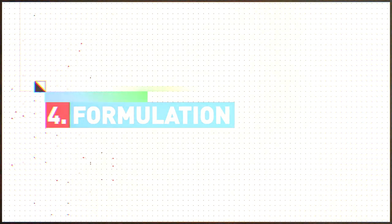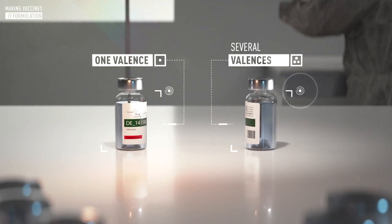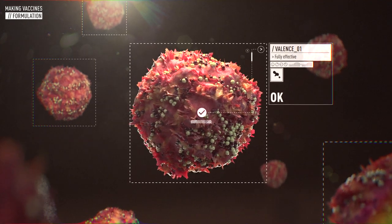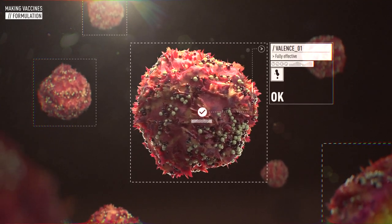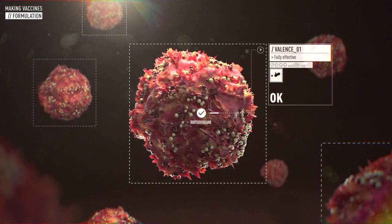A vaccine can include one or several valences to protect against one or multiple diseases in the same shot. Each valence must remain fully effective and must not interfere with the other valences. This careful, precise combination takes years of scientific research and development to perfect.